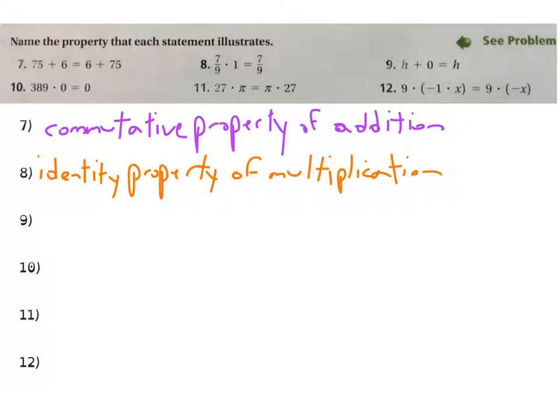So this is the identity property, and what is the operation that we're doing it with? The identity property of multiplication. And again, when you do something that doesn't change this thing's value, then that's an identity property. And look at number nine. What are we doing to H that lets it remain H? We're adding zero.